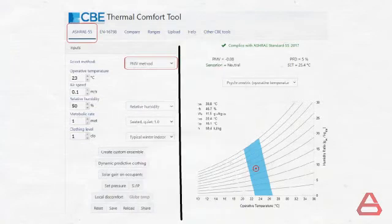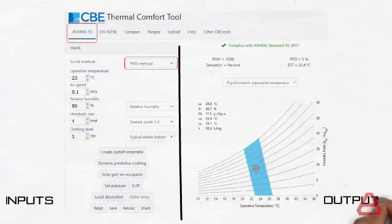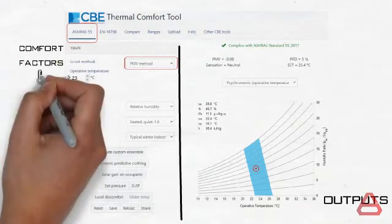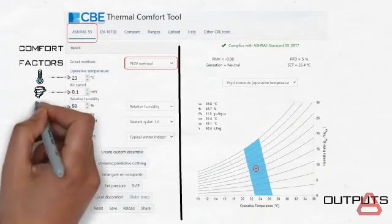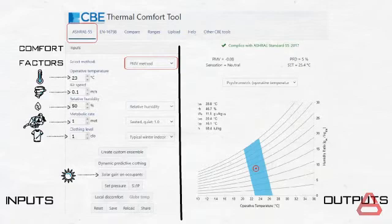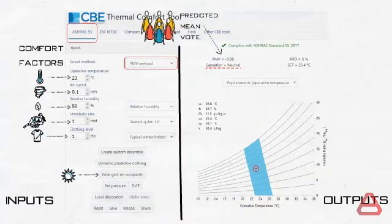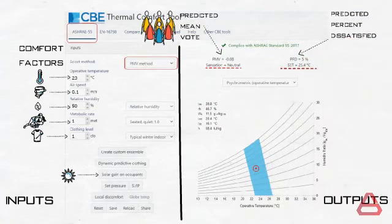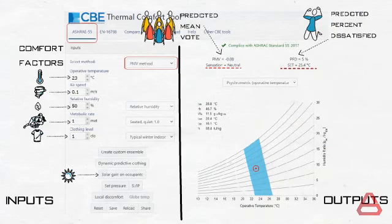The screen is divided into two main parts: inputs and outputs. In the inputs section, you have the factors that dictate human comfort — temperature, airspeed, relative humidity, metabolic rate which reflects activity, clothing level, and the mean radiant temperature, though we will ignore the last one in our case. On the right side you have the output or results section. Here you can see the PMV number generated based on the set inputs, and also the PPD, or Predicted Percentage Dissatisfied, which estimates the percent of people that would report dissatisfaction under similar conditions.